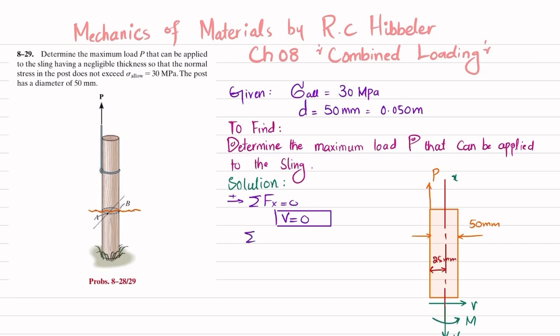Now we will find this vertical force by using this equation of equilibrium that sum of all forces along Y direction must be equal to zero, and upward force is taken as positive. So P and N are acting vertically, so P is upward, positive, and N is downward, that is equal to zero. So from here we will get N is equal to P.